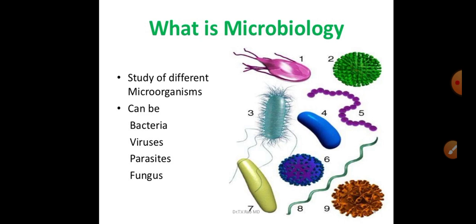They can be classified as bacteria, virus, parasites, and fungus. Bacteria — the most primitive organisms — can have shapes including bacilli, cocci, and spirals.